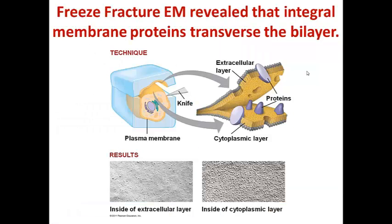We know that integral membrane proteins that traverse the membrane bilayer exist because of a technique called freeze fracture electron microscopy. In this technique, the actual membrane is frozen and then a very sharp knife is used to separate the two sides of the membrane bilayer. When we then use scanning electron microscopy to visualize the two sides, we can see one side of the membrane — the inside — that has holes where those membrane proteins were, and the other side has the majority of those proteins that were embedded in the bilayer.